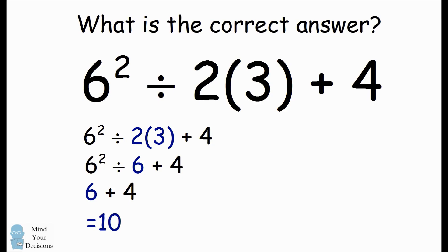Other people are saying you should look at the expression from left to right. You first take 6 squared divided by 2. 6 squared is 36 divided by 2 is 18. Then multiply that by 3 to get 54 and finally you should add 4 to get 58.